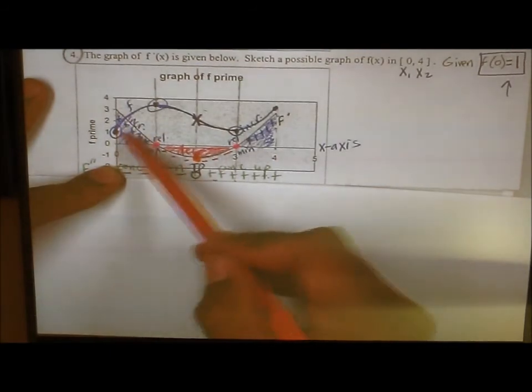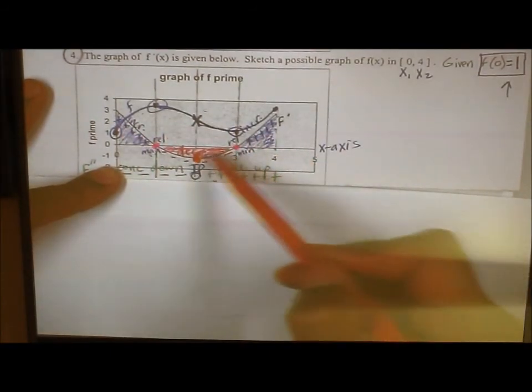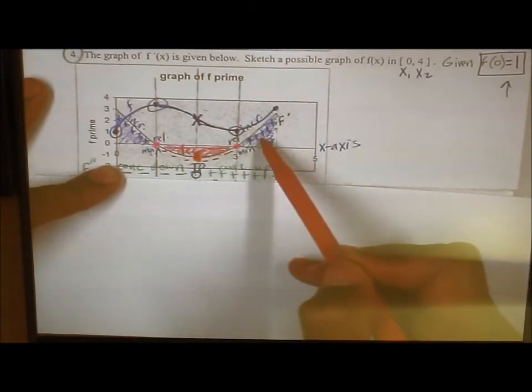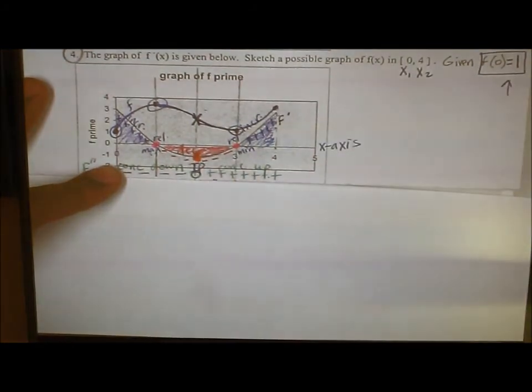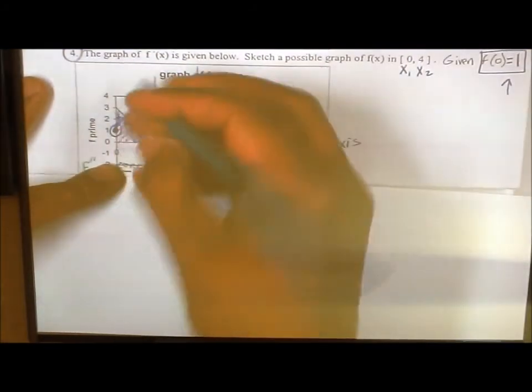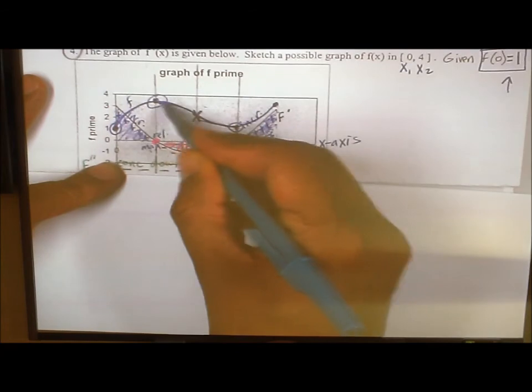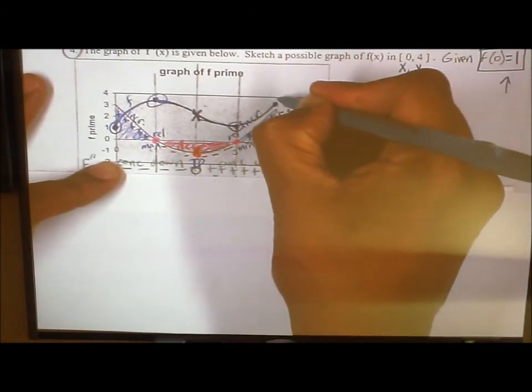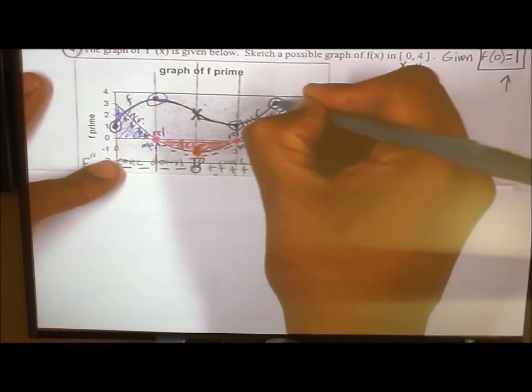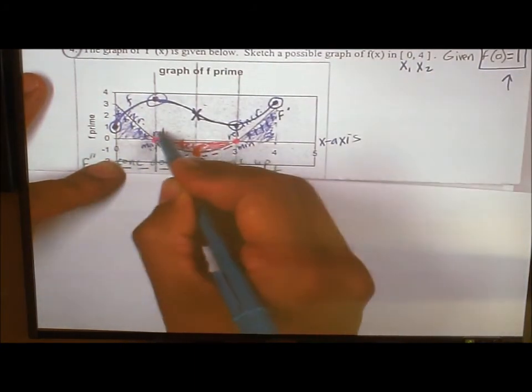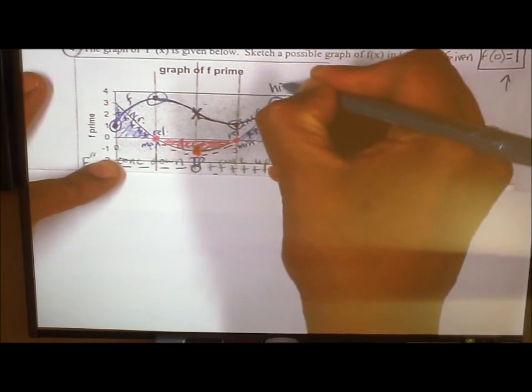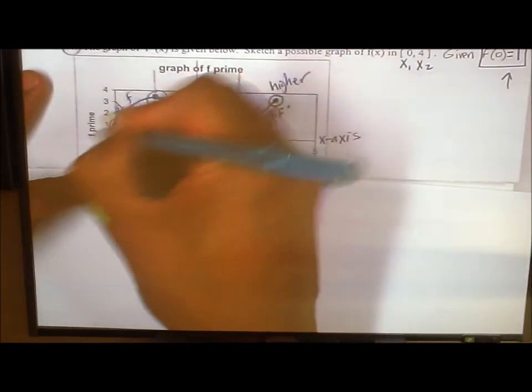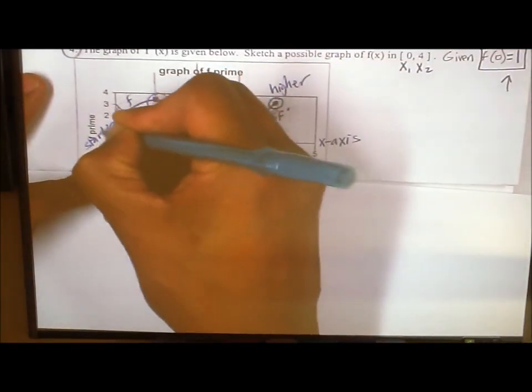So if you compare the blue area to the red area, you can tell that there's more blue, right, than red. So what does that mean? That means that wherever I start from, I'm going to have more increase overall than decrease. So that means that I should end off what compared to where I started. If there's more increase than decrease, I should end up higher than my starting.